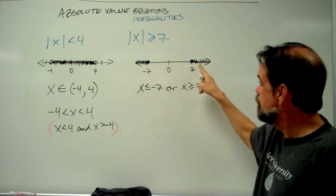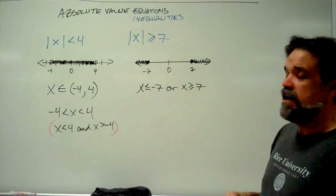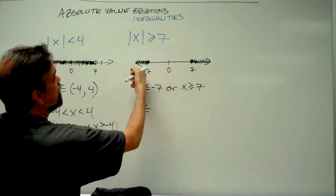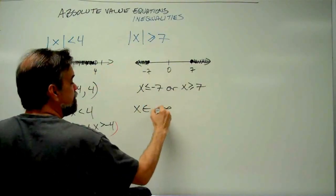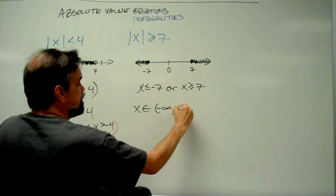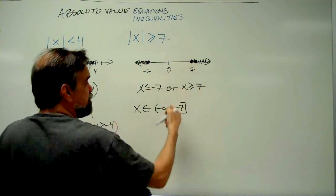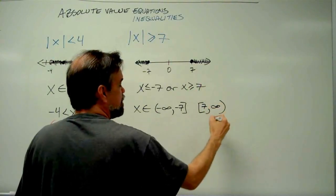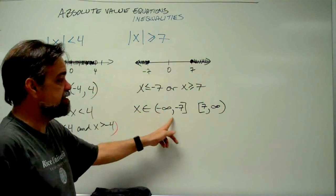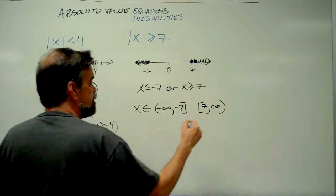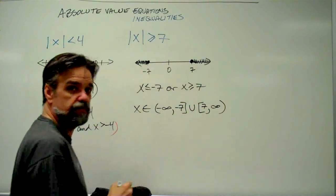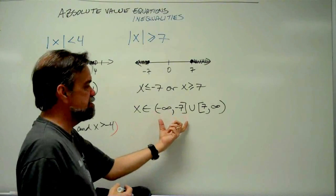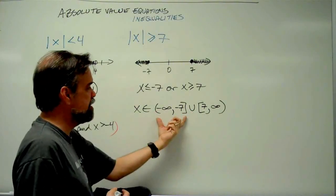So x can either be found in one set or the other. Using inequalities we write: x is less than or equal to negative 7, or x is greater than or equal to 7. In interval notation, we go from negative infinity up to negative 7, and then from 7 up to positive infinity. The symbol for 'or' in interval notation is the union symbol, which looks like a u — it means the union of those two sets.